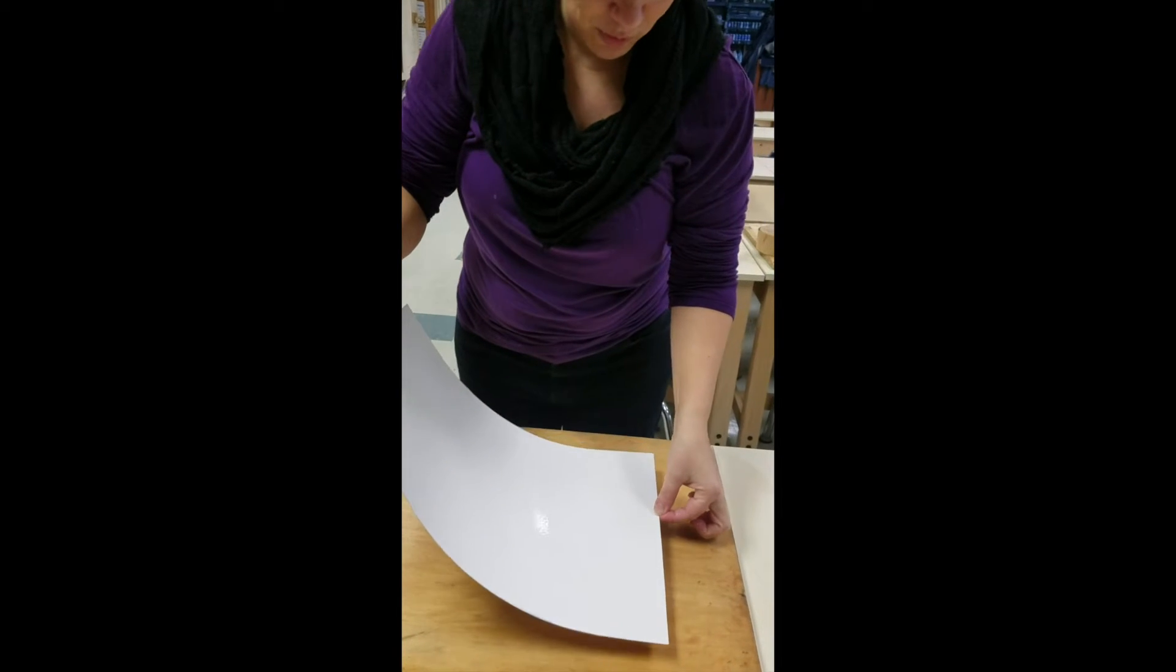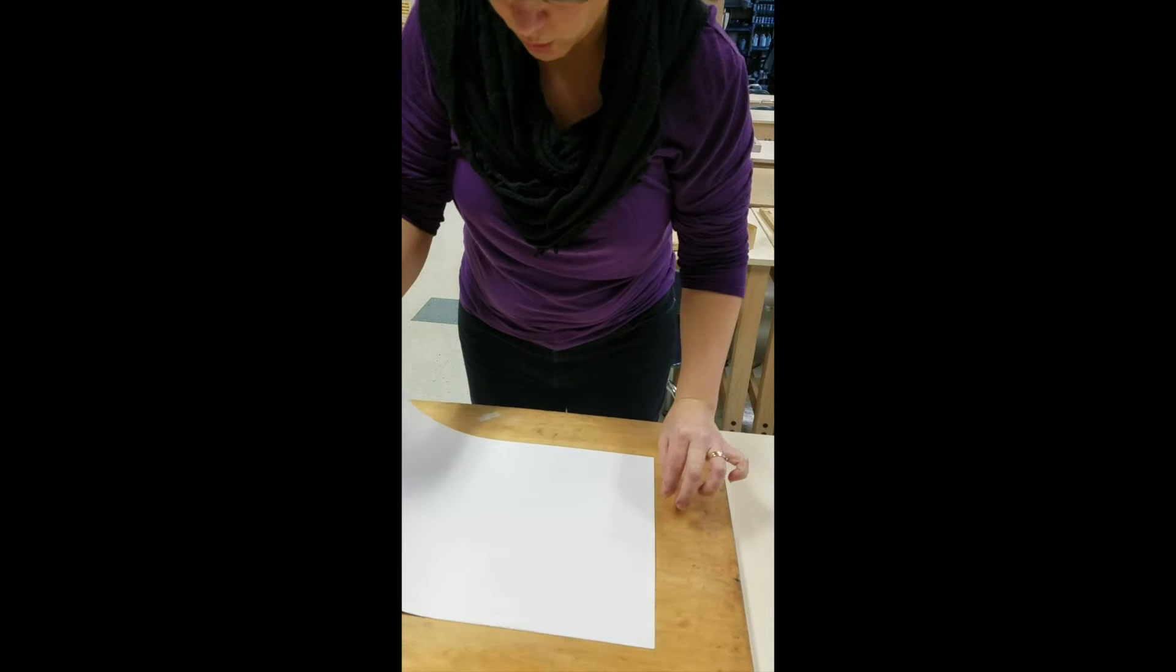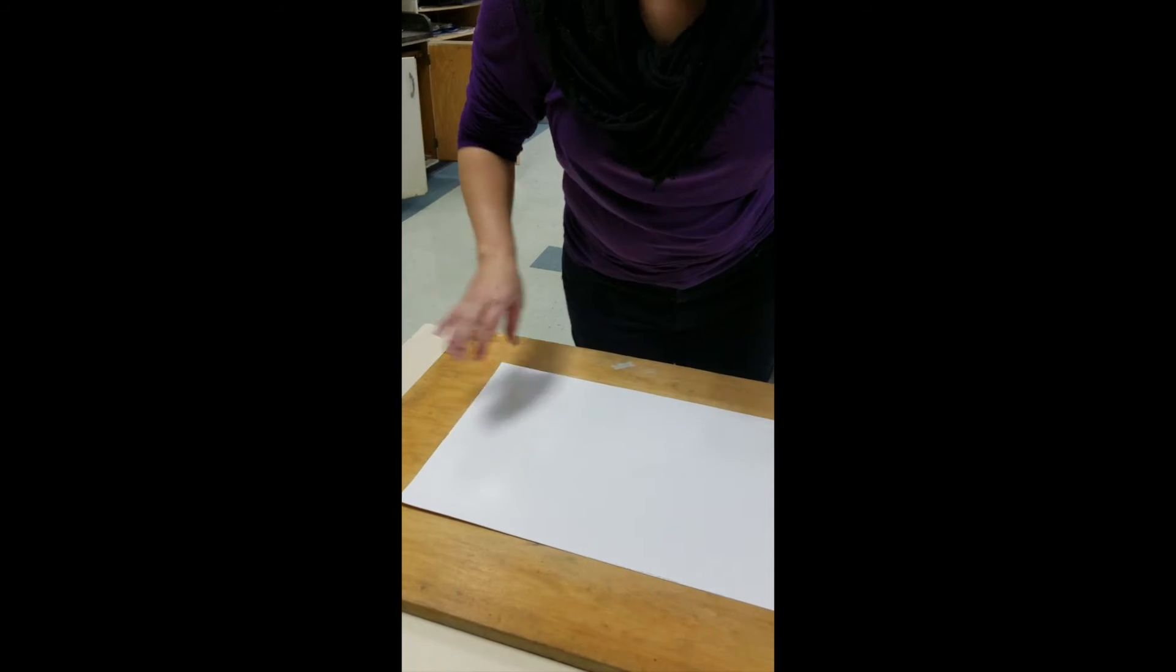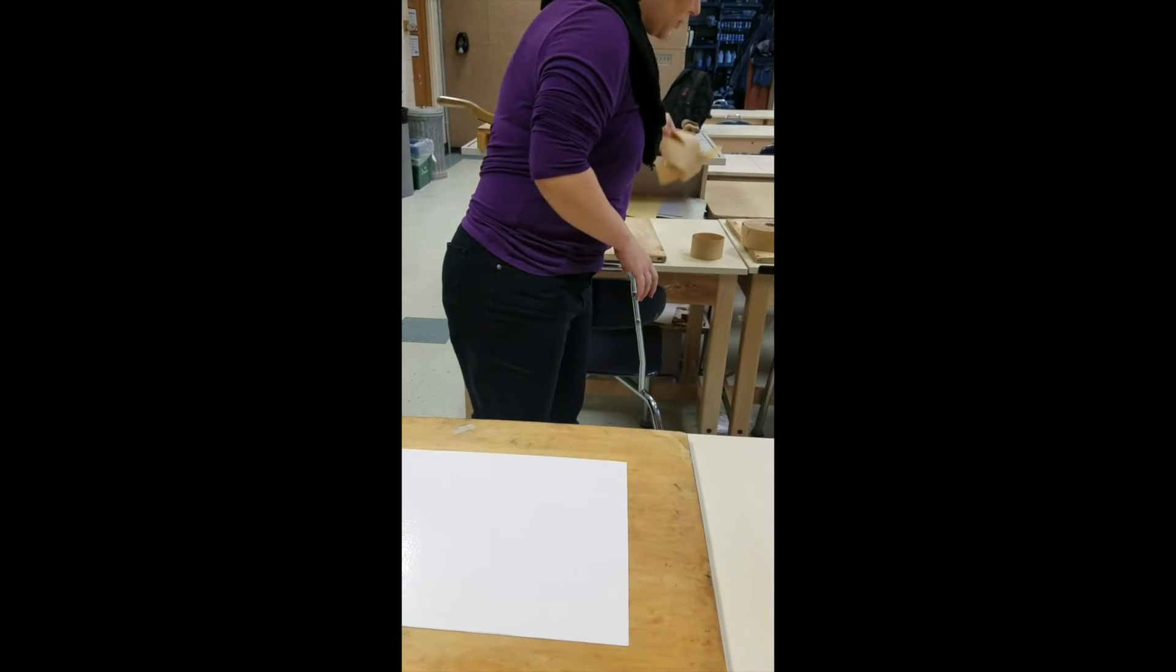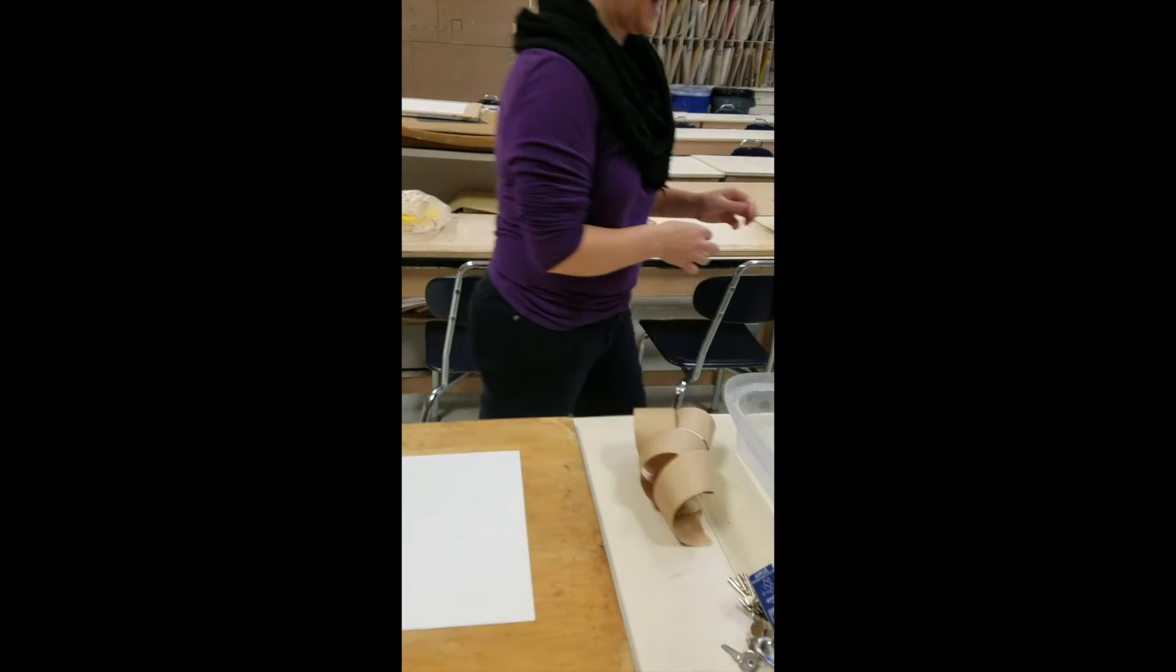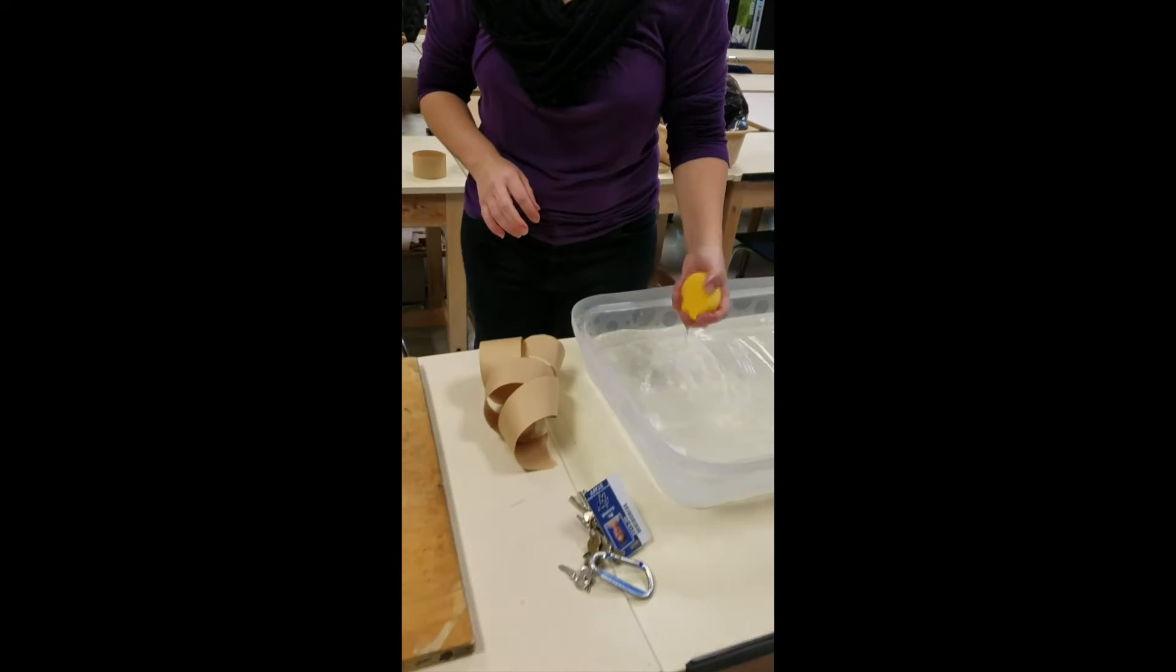Once most of the water is off of my paper, I'm going to take it over to my clean board and very gently roll it from one side to the other onto my board. Once it's down, I'm going to immediately grab my tape and tape the different sides. I need to get a sponge. The sponge is completely clean.